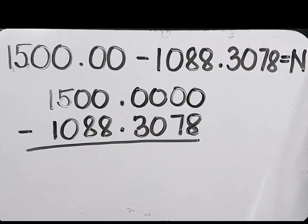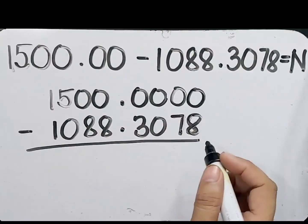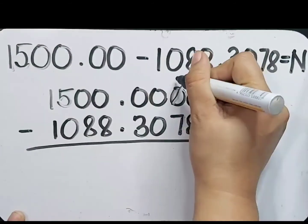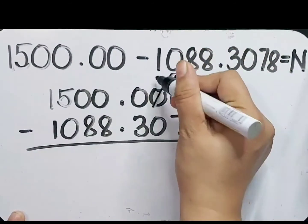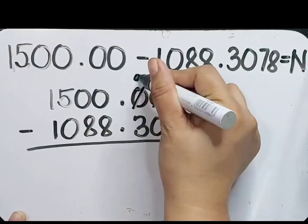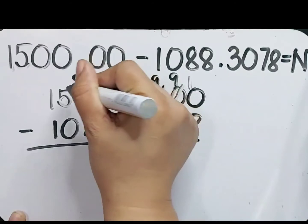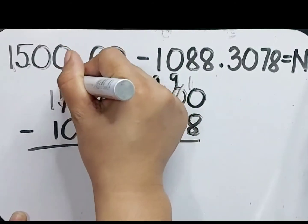Now let's subtract this as we are subtracting whole numbers. Let's regroup if necessary. 0 minus 8. Let's regroup 1 from 0. It will be 9, 9, 9, 9, 9, 9. And this will now become 4.